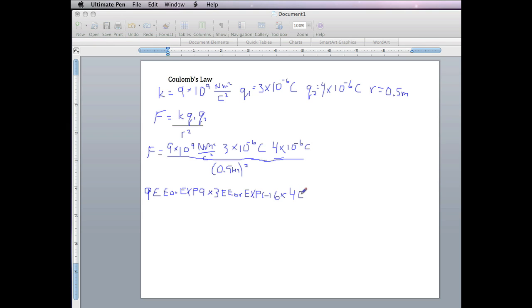Then multiply by 4, EE or EXP, change sign key, and the 6. Then we divide by 0.5—you can enter that as 0.5 or simply .5—and then that's squared, so you can hit the squared key.